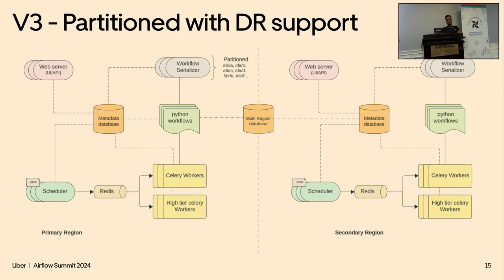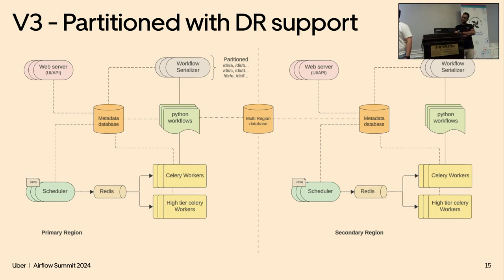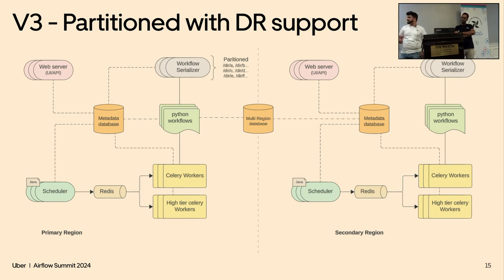To address the noisy neighbor problem, we created high-tier Celery workers where high-tier pipelines get scheduled, separate from the Redis queue used by the regular Celery workers. Low-tier pipelines go to old Celery workers. We also have the ability to partition high-tier workers based on different teams — so if the Maps team needs a dedicated cluster, that goes onto a different partition. However, this doesn't fully solve the noisy neighbor problem since parallel tasks can still starve each other. The Kubernetes executor will be the ideal solution we plan to move to soon.